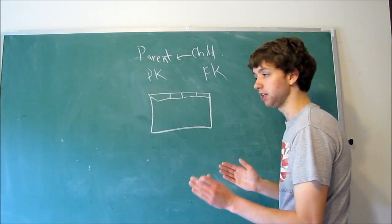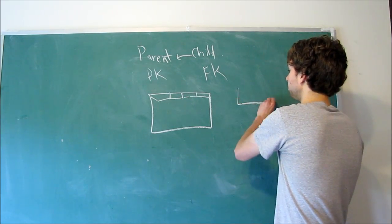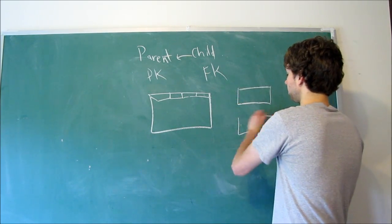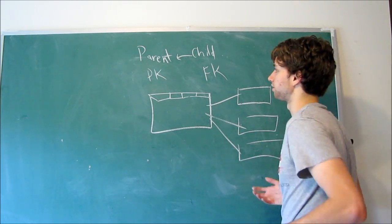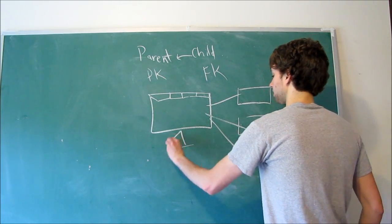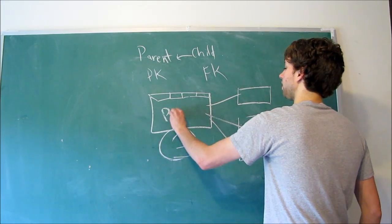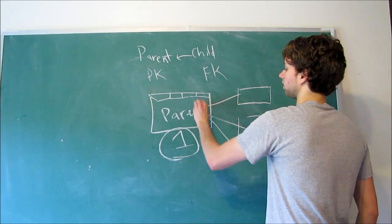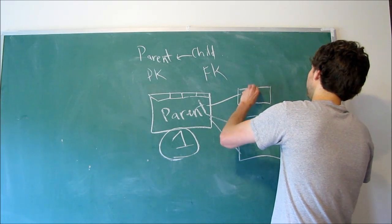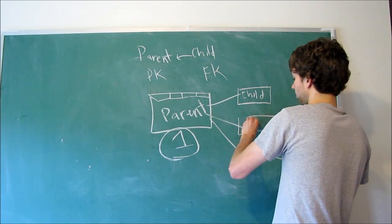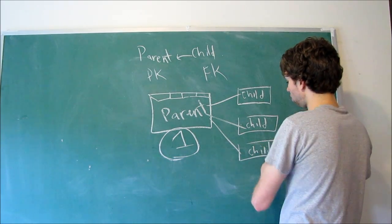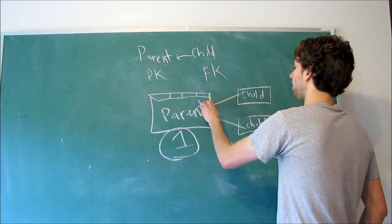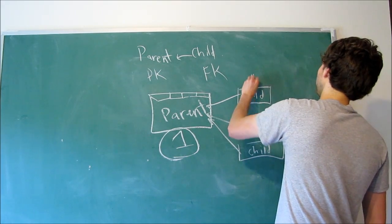But when we get to one-to-many, that's when we have this table pointing, or it has many children. So you would say this is the one side. It's the parent. Then we have each of the parent's children. These all point back to the parent with a foreign key.